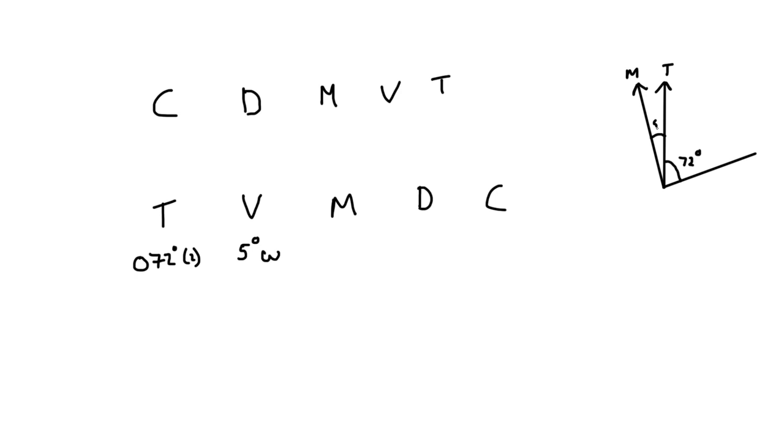We can see that to measure that bearing from magnetic, it's going to be all the way around here, which is 72 plus 5, which equals 077 degrees magnetic.